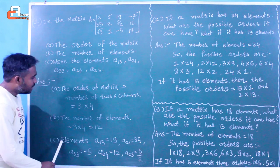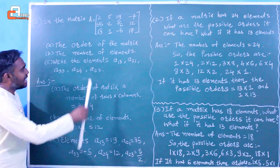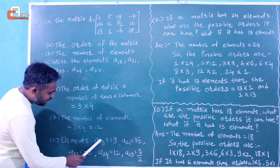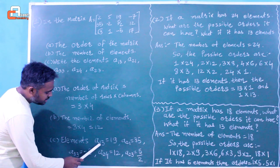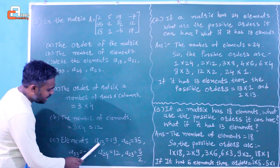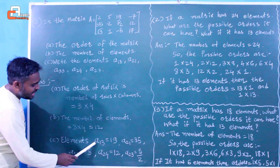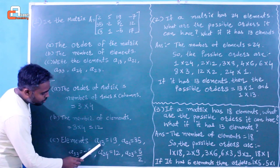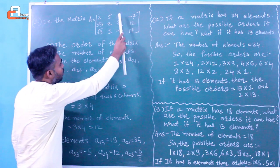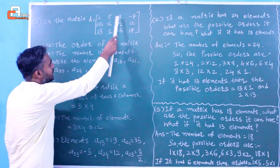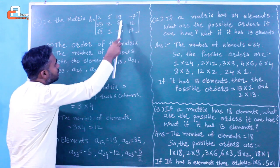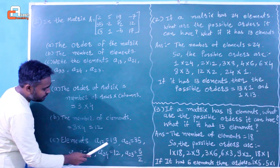Now we need to find some specific elements. For a13, the first subscript 1 indicates the row number and the second subscript 3 indicates the column number. So a13 is the element which lies in the first row and third column. Looking at the matrix, the element at first row and third column is 19. So our element a13 equals 19.